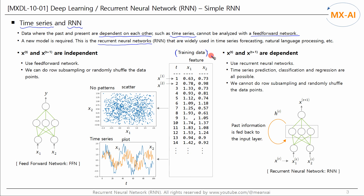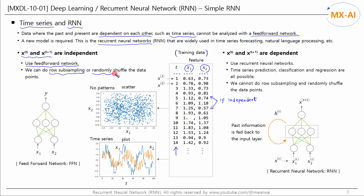Let's consider the following training data. There are two features, x1 and x2, and these are data indices. So far we've been using feedforward networks to learn from this data. If the data points are independent, it makes sense to use a feedforward neural network — if xt and xt+1 are independent, we can use it for classification or regression. You can also perform row subsampling or randomly shuffle the data points. Let's use this data to create a scatter plot. Since we have two features, we can plot the data points in a two-dimensional space of x1 and x2. This figure appears to have no pattern at all, but if we plot these data points differently, a clear pattern emerges.